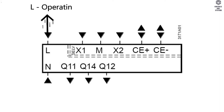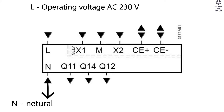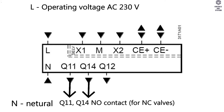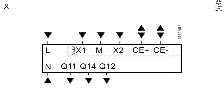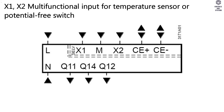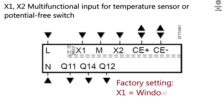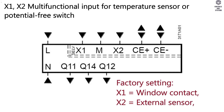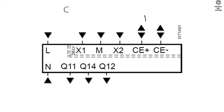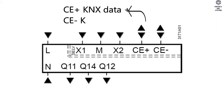Connection Terminals: L terminal — operating voltage AC 230V. N terminal — neutral. Q11 and Q12 terminal — NC contact for NO valves. Q11 and Q14 terminal — multifunctional input for temperature sensor or potential-free switch. Factory setting: X1 = window contact, X2 = external sensor. M terminal — measuring neutral for sensor and switch. CE+ terminal — KNX data plus. CE− terminal — KNX data minus.